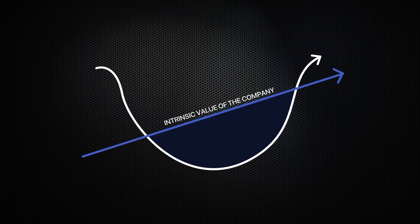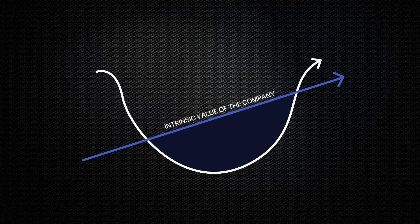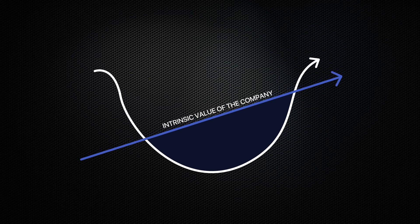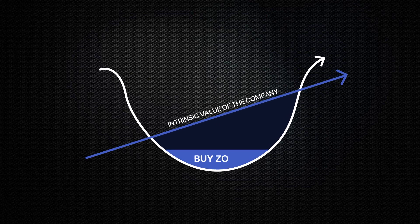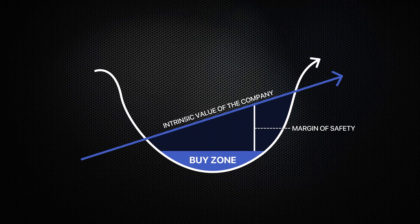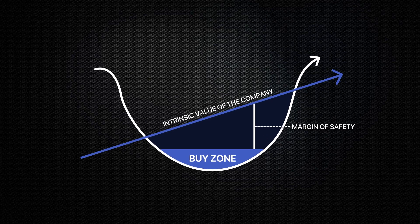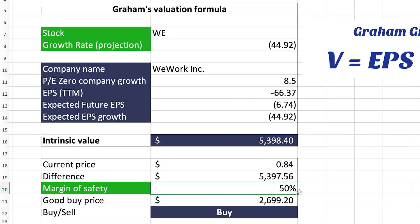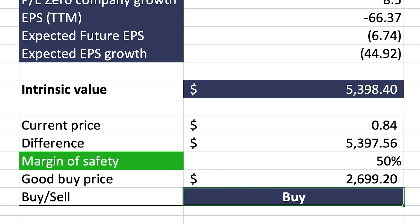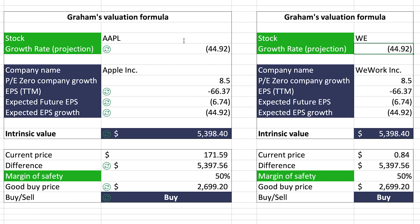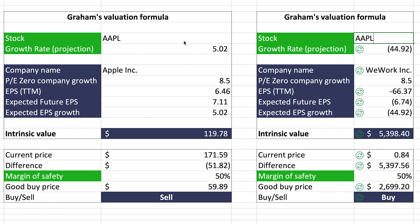Another key to success with this formula is ensuring you have a margin of safety — that is, buying at a price lower than what the formula says the stock is worth, so that if your numbers are wrong, you can still make a return on your investment. The recommended margin of safety is at least 30%, but in this case we'll use 50%, which will lower the intrinsic value by that percentage.